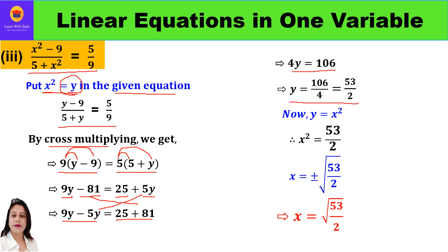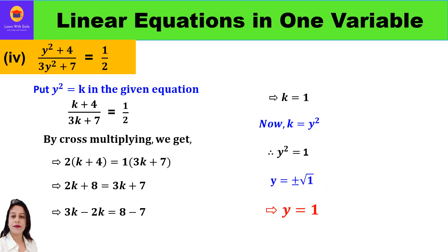So y = 106/4 = 53/2. Replacing y with x², we get x² = 53/2, so x = ±√(53/2). Since the question asks for the positive value, x = √(53/2). We need not simplify further; you can just write the final answer as √(53/2).